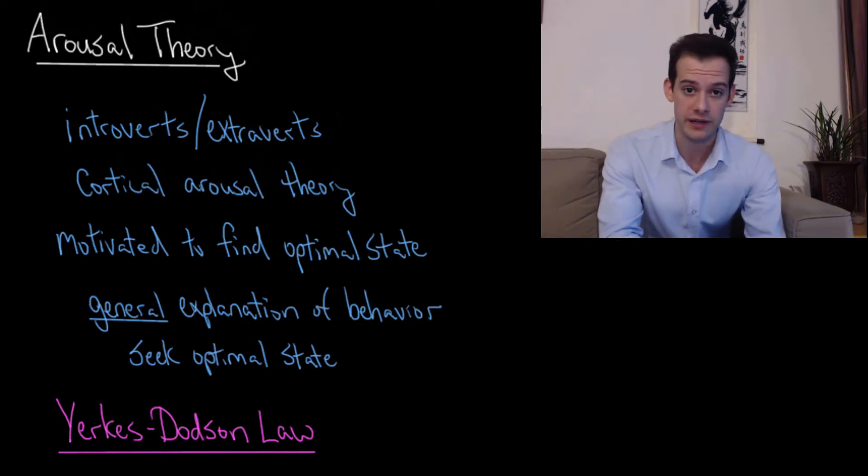So we'll start with arousal theory. If you watched my videos in the personality unit, then you're already familiar with this idea, because I talked about the theory proposed by Hans Eysenck that introversion and extroversion could be explained by differences in cortical arousal. This was a proposed biological explanation for why people differ in their level of introversion or extroversion.